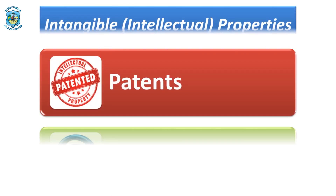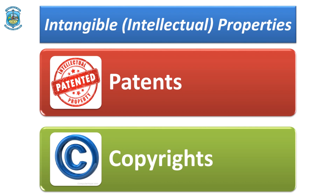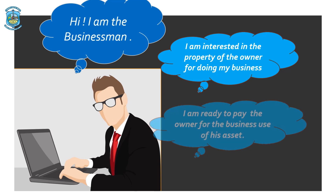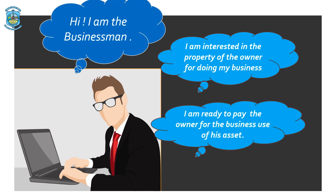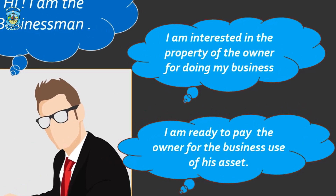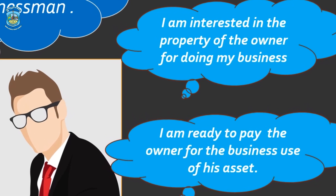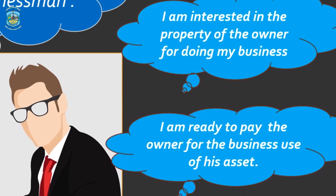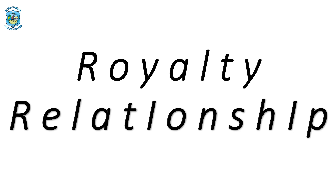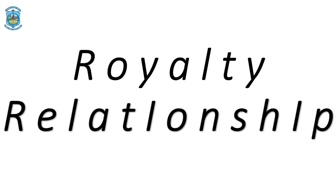The third important component of royalty is the businessman or the company which is interested in the property of the owner. In return, he is interested in paying an amount for the business use of the property of the landlord. So now shall we understand the relationship between the three of them?